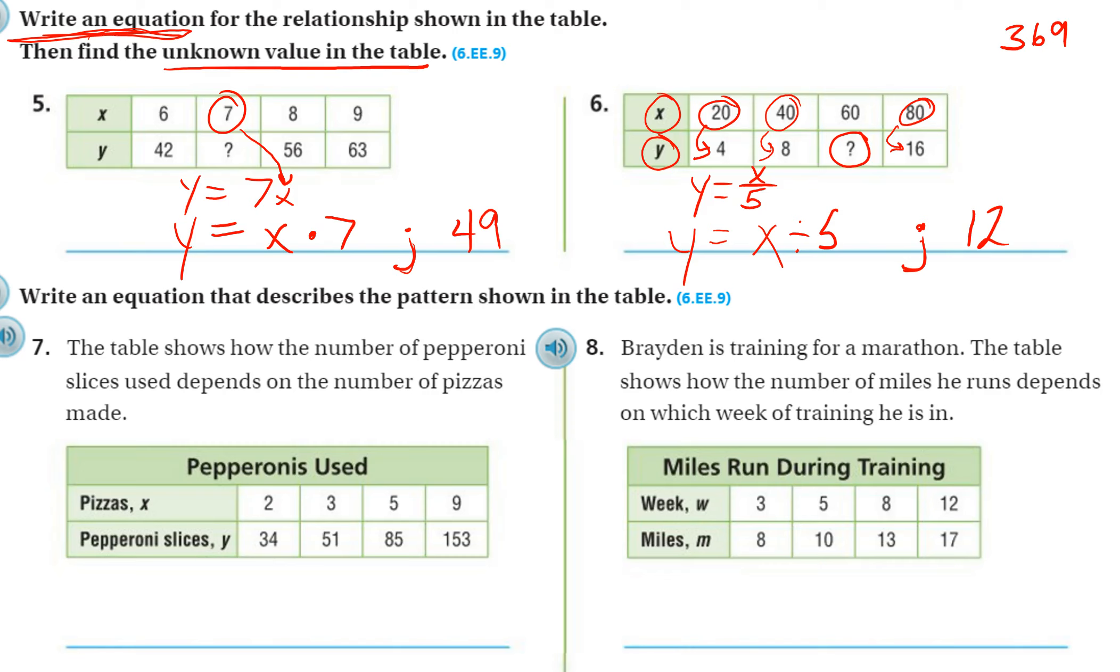Alright, let's go on to the bottom 2 here. It says write an equation, so I know I'm going to need an equal sign again, that describes the pattern shown in the table. And again, my input is on top, this is my input. This is my output. So I want my output by itself, and then my x. What am I doing to the x to get the y? So I'm going from 2 to 34, so I'm getting bigger. So I know I'm most likely going to need to add or multiply. And 2 plus 32 would give me 34, but 3 plus 32 would not give me 51. So it must be multiplying.